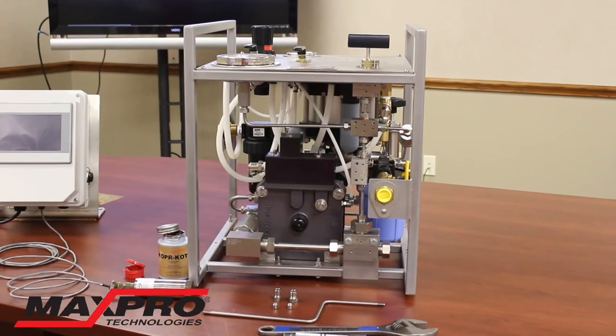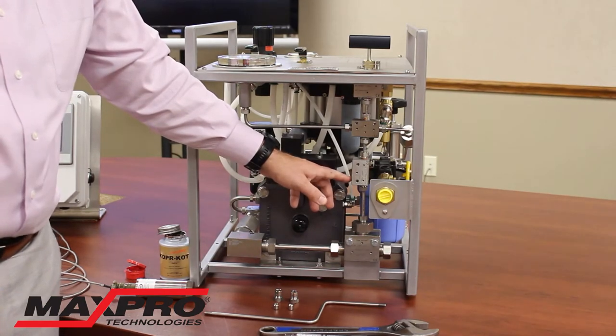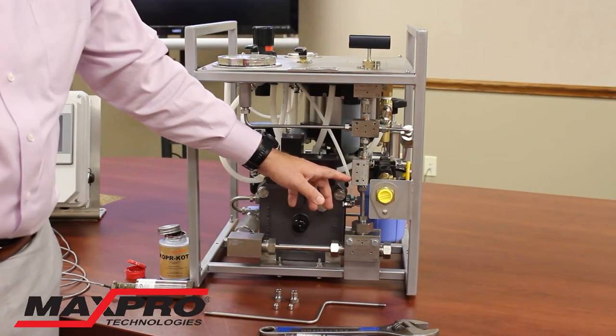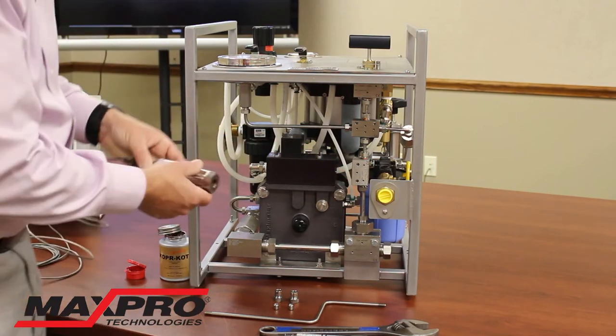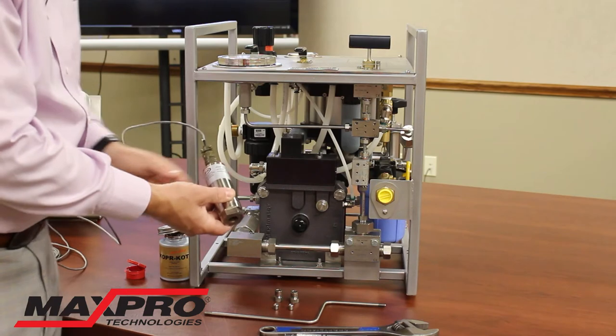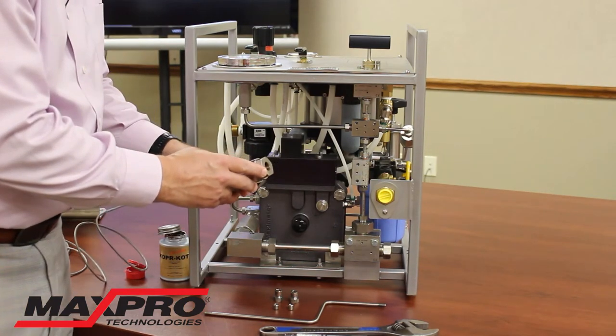So here I'm at the quarter inch auxiliary port on the Power Cube. This is quarter inch high pressure and I've removed the plug and gland out of there. I have the 30k transducer which is wired to the logger and it also has a quarter inch high pressure connection.